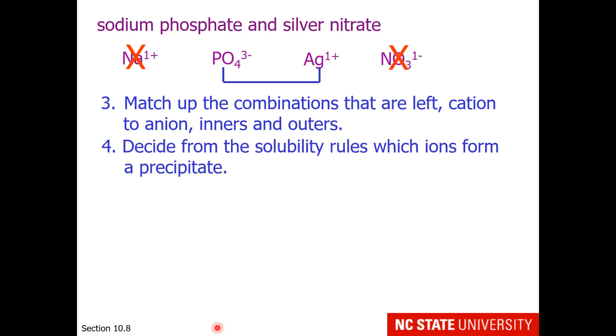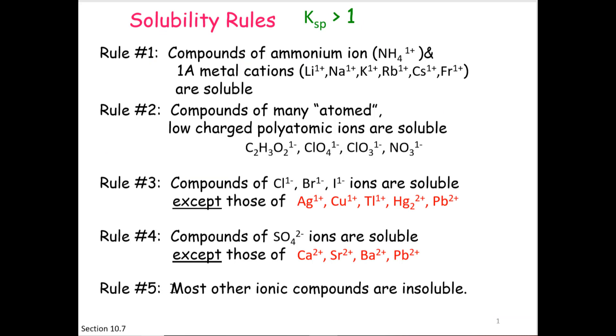Now we can decide from the solubility rules which ions form a precipitate. So let's take a look at those rules. Phosphate has a very high charge on it, a 3-. So it falls under rule 5, which is the catch-all. Most other ionic compounds are insoluble, meaning a precipitate forms.